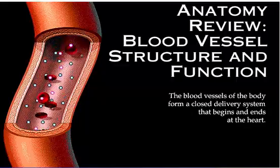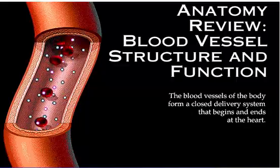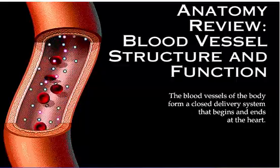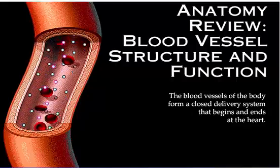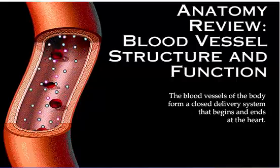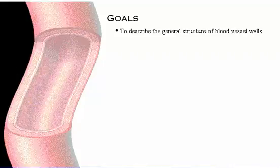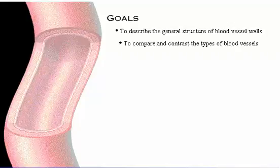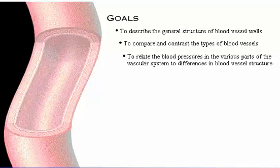The blood vessels of the body form a closed delivery system that begins and ends at the heart. Your goals for learning are to describe the general structure of blood vessel walls, to compare and contrast the types of blood vessels, and to relate the blood pressures in the various parts of the vascular system to differences in blood vessel structure.